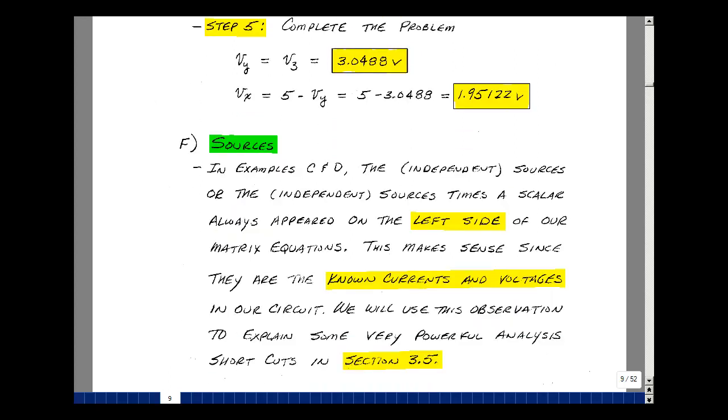But just some observations. In example C, where we had two current sources, and example D, where we had one voltage source, we saw the left-hand side of the equation was either that current source directly, or the voltage source, or the voltage source times a scalar.